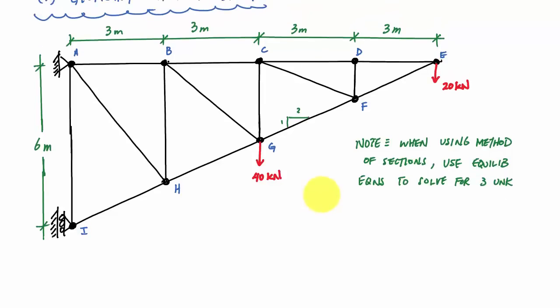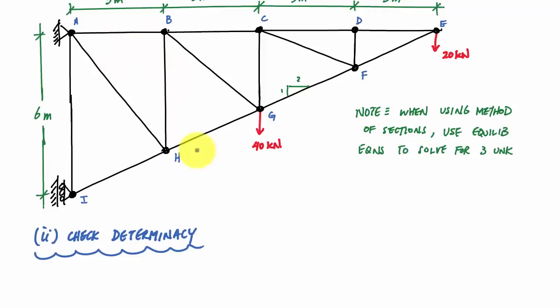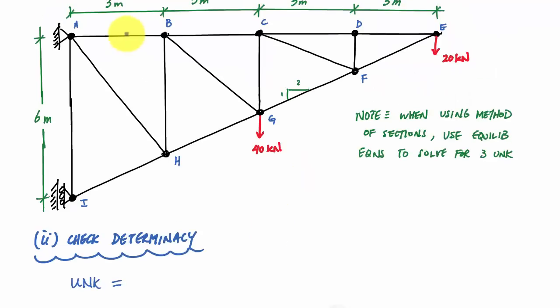One of the things I like to do before going through the analysis is evaluate the determinacy of the truss — comparing the number of unknowns with the number of equations available. Every member represents an unknown with unknown internal loading. Because the entire structure is connected by pins, I only need to worry about internal normal forces. Counting the members: 1, 2, 3, 4, 5, 6, 7, 8, 9, 10, 11, 12, 13, 14, 15 members.